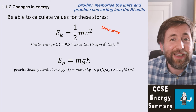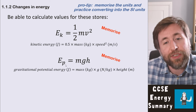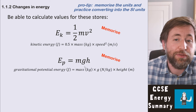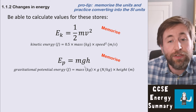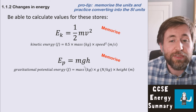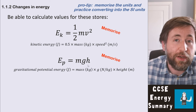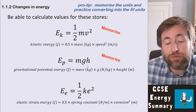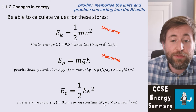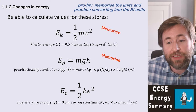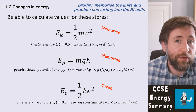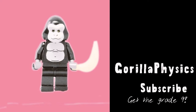Gravitational potential energy also needs to be memorized: GPE = mass × g × height, where g is gravitational field strength, usually 10 N/kg (they'll give you the value to use). The elastic strain energy is ½ × spring constant (in N/m) × extension². That one is given to you on the formula sheet, so you don't need to memorize it.